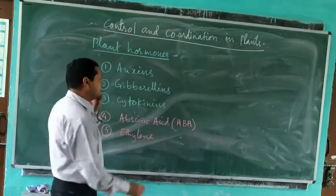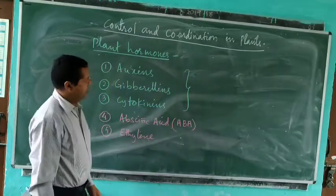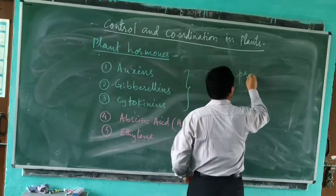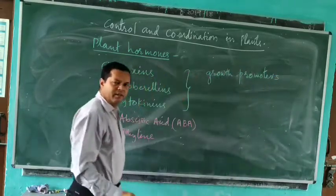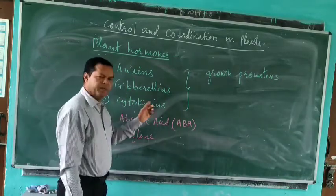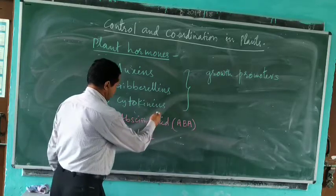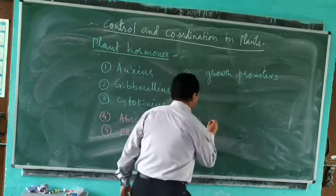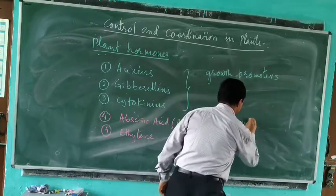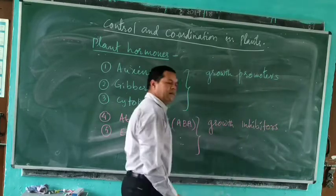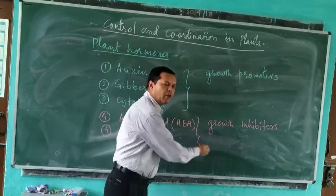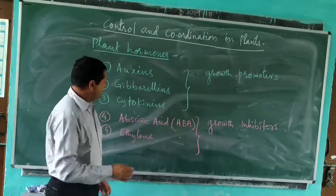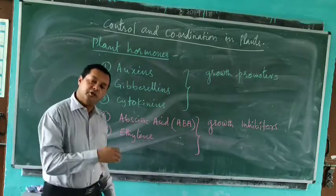Out of these five plant hormones, the first three are called growth promoters, because they promote growth. They help in the growth and development of the plant body.